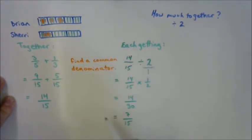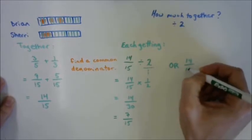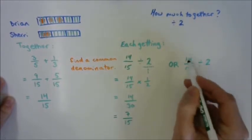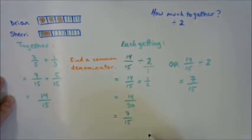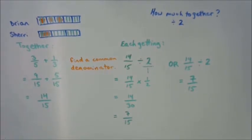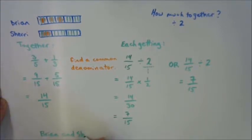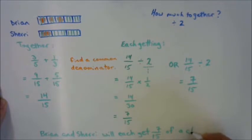Another way to think about it: if you have a pile of fourteen pieces, how many does each person get? They're each going to get seven of the fifteenths — fourteen fifteenths over two. It's a word problem, so we need our final answer as a sentence: Brian and Sherry will each get seven fifteenths of a chocolate bar.